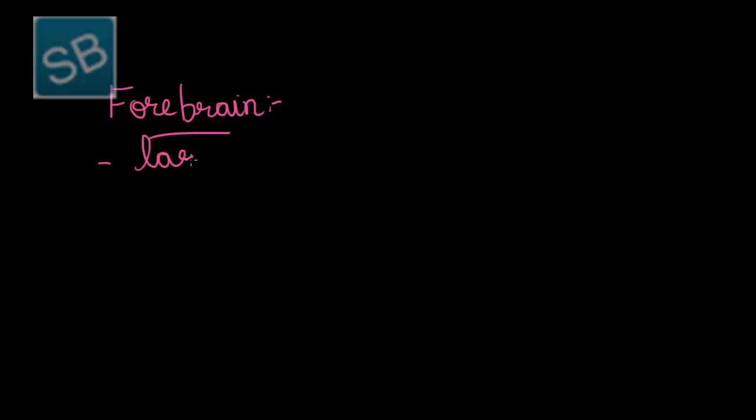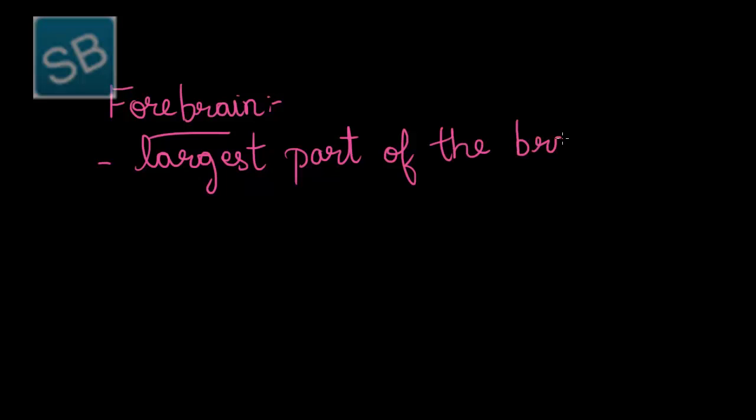Let us start with the structure of the forebrain. The brain is basically divided into three parts: forebrain, midbrain, and hindbrain. The forebrain is considered the largest part of the brain and is formed mainly of three regions.